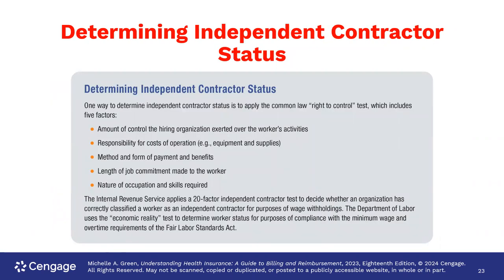How do we know when somebody is an independent contractor? The IRS, the California Franchise Tax Board, the State of New Jersey, and other government agencies are very interested in this because it affects how much state tax revenue somebody is generating. One way they determine independent contractor status is through the right to control — how much control does the organization have over the workers' activities, how they're paid, what the job commitment is, and the nature of the occupation and skills. The Internal Revenue Service has a 20-factor test they apply, and California requires a questionnaire. As a result of recent assembly bills signed into law in California, independent contractors in healthcare are largely going away.